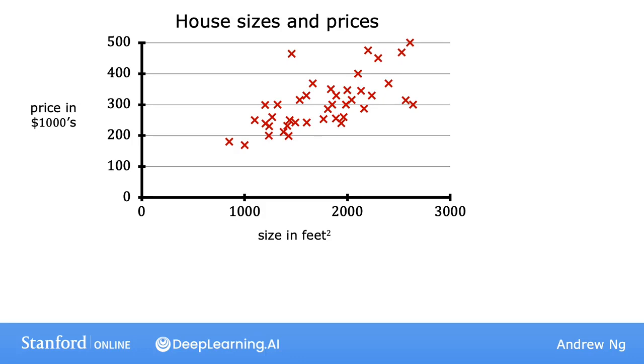Now, let's say you're a real estate agent in Portland, and you're helping a client sell her house. And she's asking you, how much do you think you're going to get for this house? This dataset might help you estimate the price she could get for it. You start by measuring the size of the house, and it turns out that her house is 1,250 square feet. How much do you think this house could sell for?